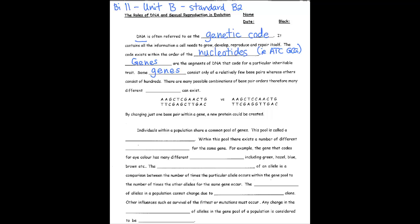There are many possible combinations of base pair orders. Therefore, many different alleles can exist.